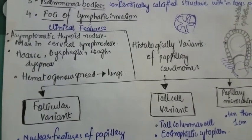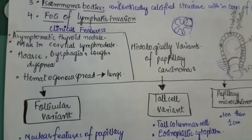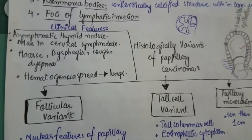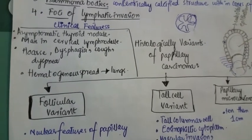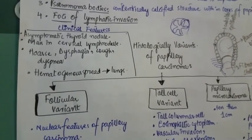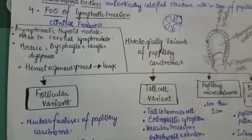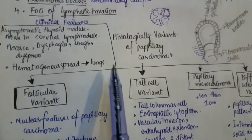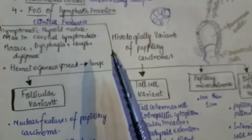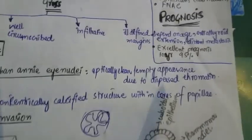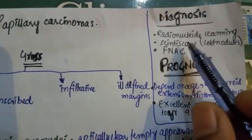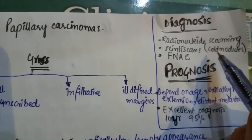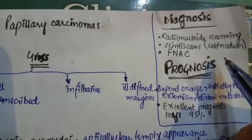Clinical features of papillary carcinoma include an asymptomatic thyroid nodule and a mass in the cervical lymph nodes. If the nodule is large enough, it can cause hoarseness of voice, dysphagia, cough, and dyspnea. With hematogenous spread, as seen in the follicular or tall cell variants, metastasis to the lungs can occur.